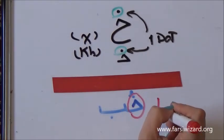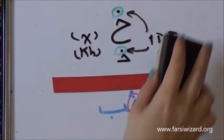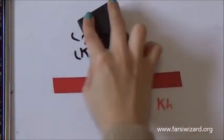So, for example, here we have the word KHOB. The first letter is KHE, KHOB. And KHOB in Farsi means well, or fine, something like that.